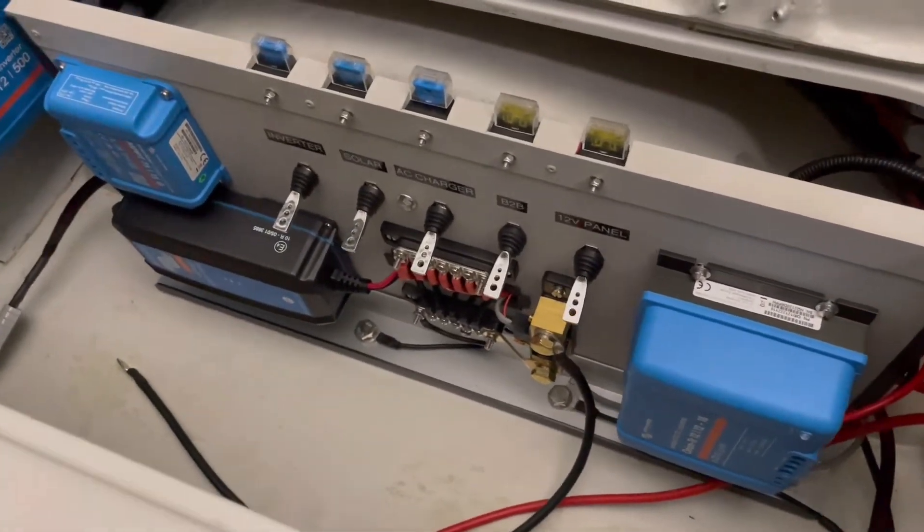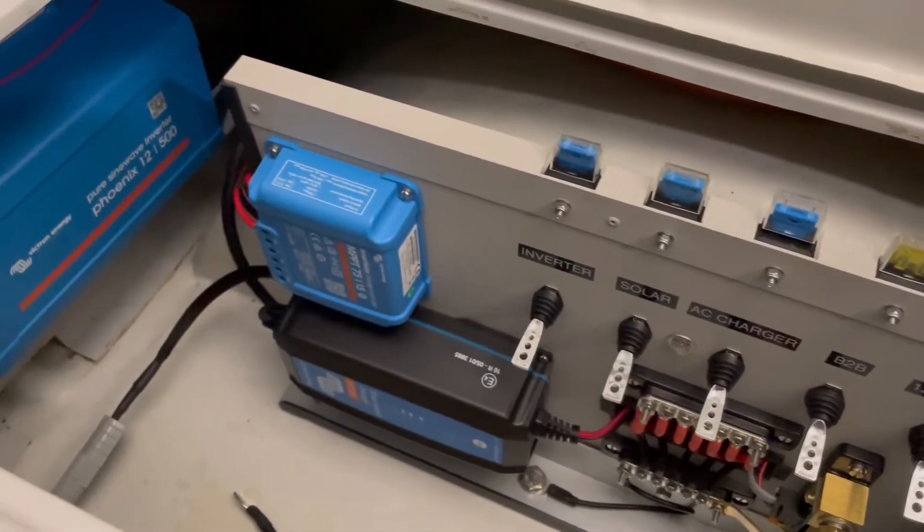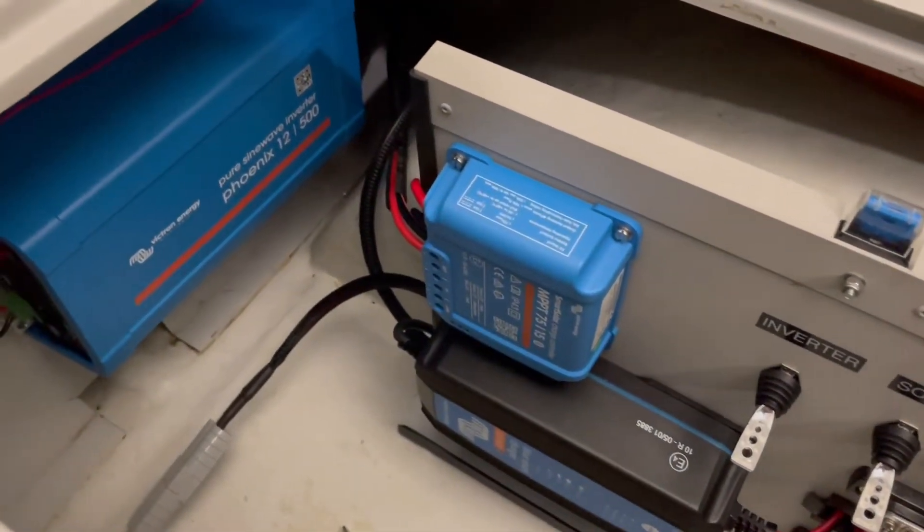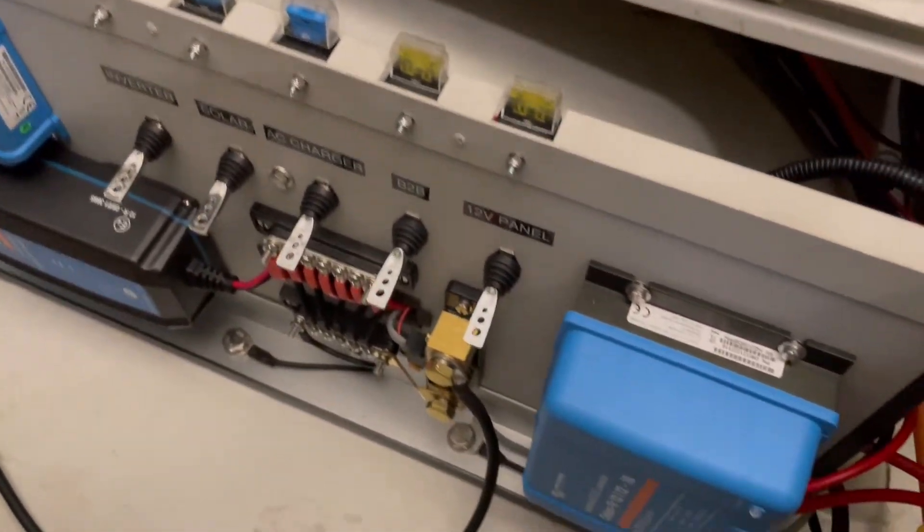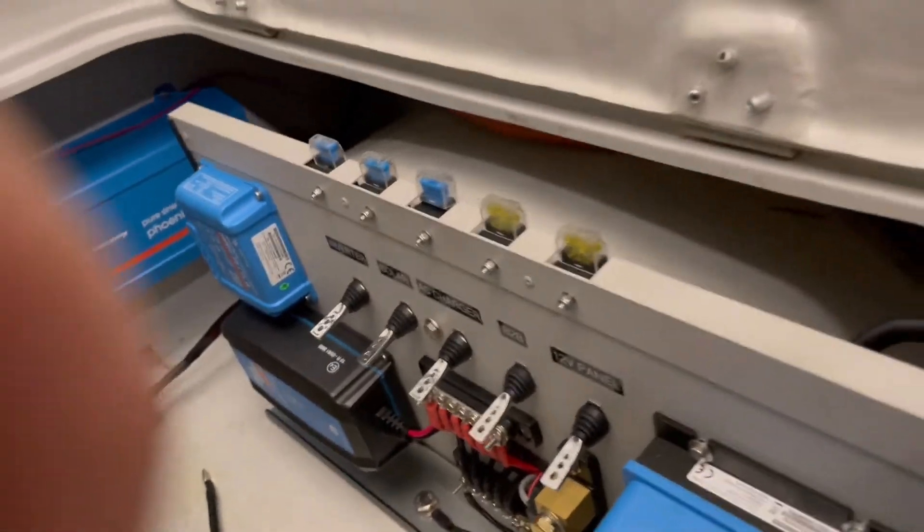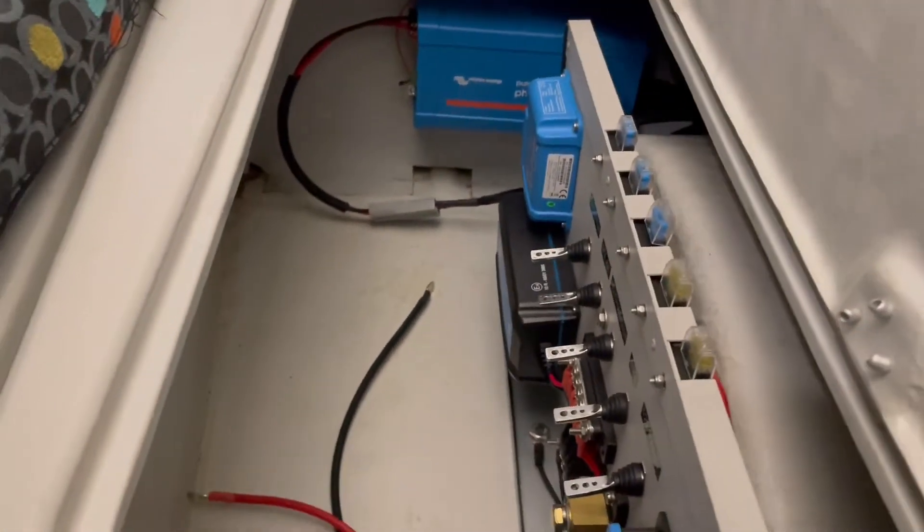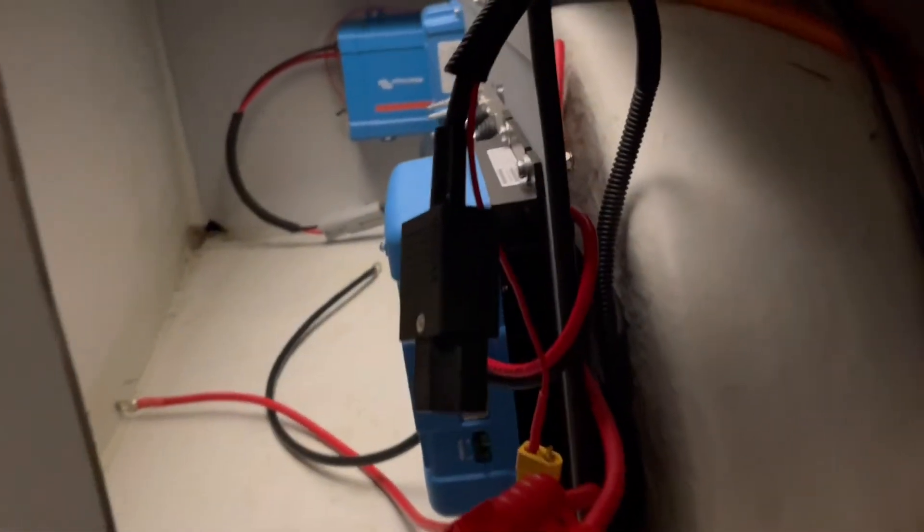Now the Victron power panel is installed and connected up to the inverter. It's bolted down to the brace at the bottom and is just waiting for its battery and for the panel that's going to come in here.